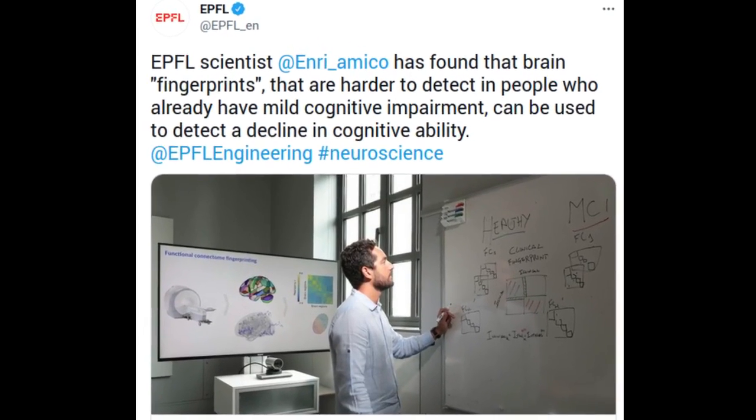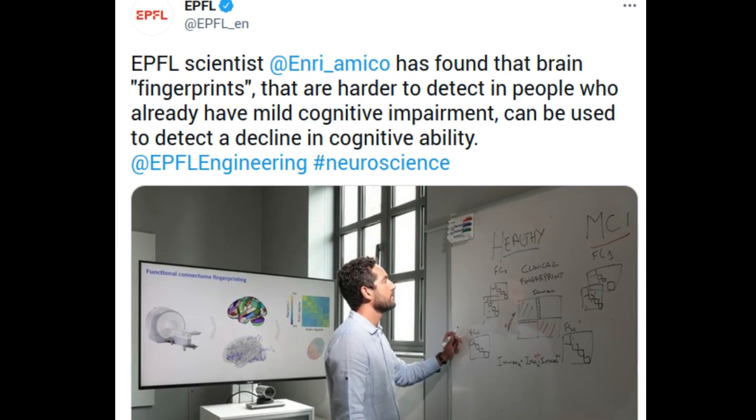An EPFL scientist has found that brain fingerprints, or maps of the neural connections within our brain, can be used to detect a decline in cognitive ability. That's because the fingerprints are harder to detect in people who already have mild cognitive impairment.